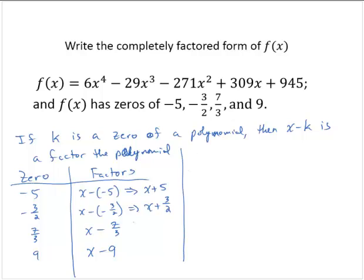So then we have four factors. So we can say that f(x) is equal to, let's just multiply out the factors. We would have x plus 5, x plus 3 halves, x minus 7 thirds, and x minus 9.